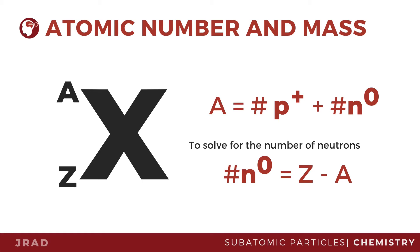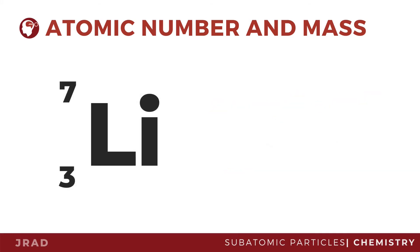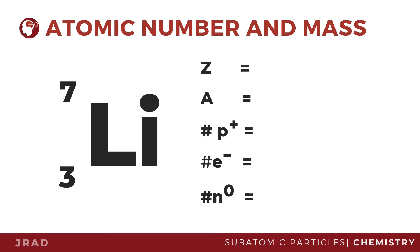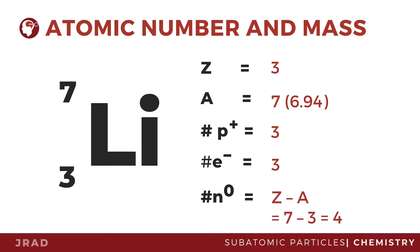For example, let us consider the atom of lithium. Looking at the symbols, lithium has the atomic number of 3 and the mass number of 6.94, or approximately 7. This means that lithium has a total of 3 protons and 3 electrons. To find the number of neutrons, simply subtract the number of protons from its atomic mass. This means that lithium has 4 neutrons.